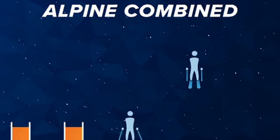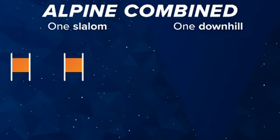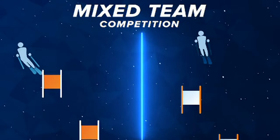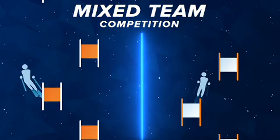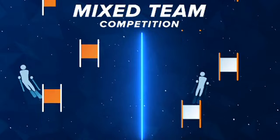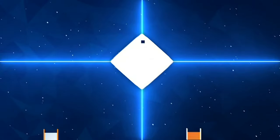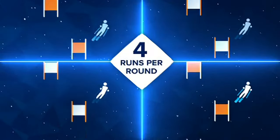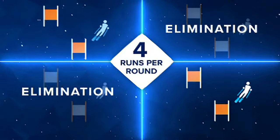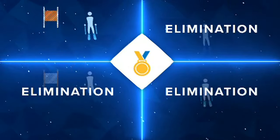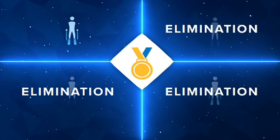Alpine combined consists of one downhill run and one slalom run. The mixed team competition involves skiers going side by side against another team down identical slalom courses. There are four runs per round. It's an elimination tournament format — the team that wins each round advances until the gold medal is decided.